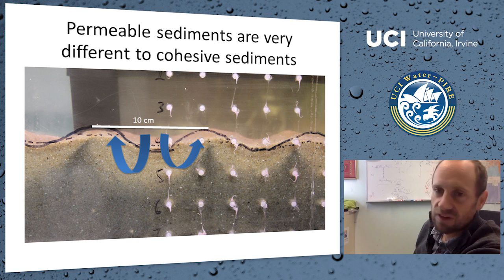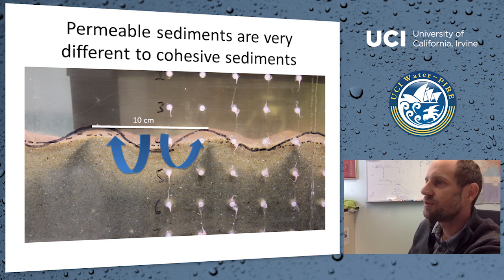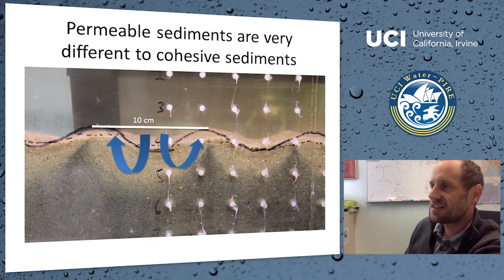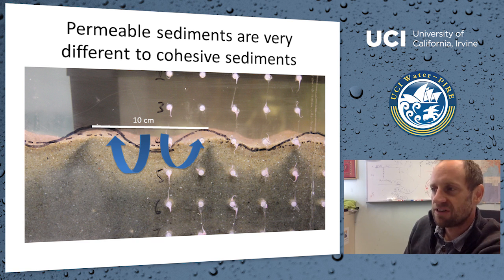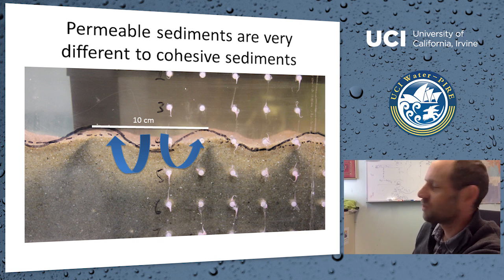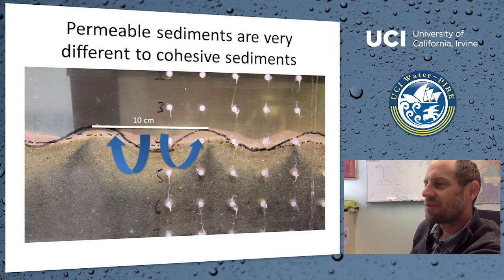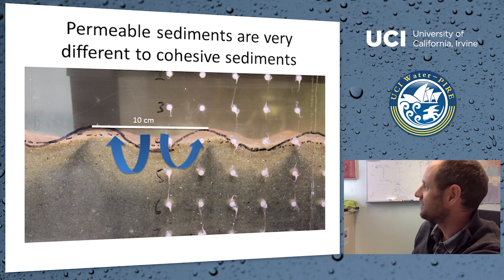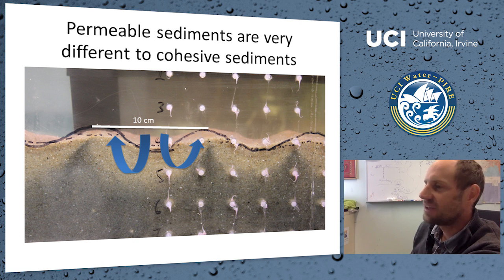Now moving on to permeable sediments. Sandy sediments are quite different to cohesive sediments — the key difference is that water can flow through them. Intuitively: if you dig a hole at the beach, pour in a bucket of water, the water disappears quickly because the sand is permeable. If you dug a hole in the mud and did the same thing, the water wouldn't disappear. This has interesting implications for how elements are cycled in sandy sediments.